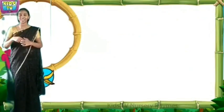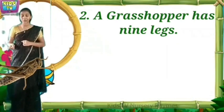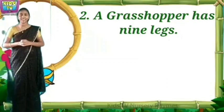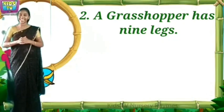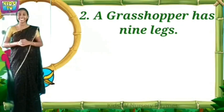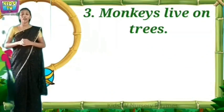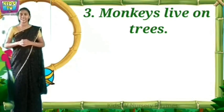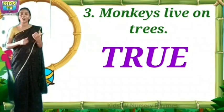The second question: a grasshopper has nine legs. Insects have only six or eight legs. They said a grasshopper has nine legs — grasshopper is an insect, so the answer is false. The third question: monkeys live on trees. Yes, monkeys do live on trees, so the answer is true.